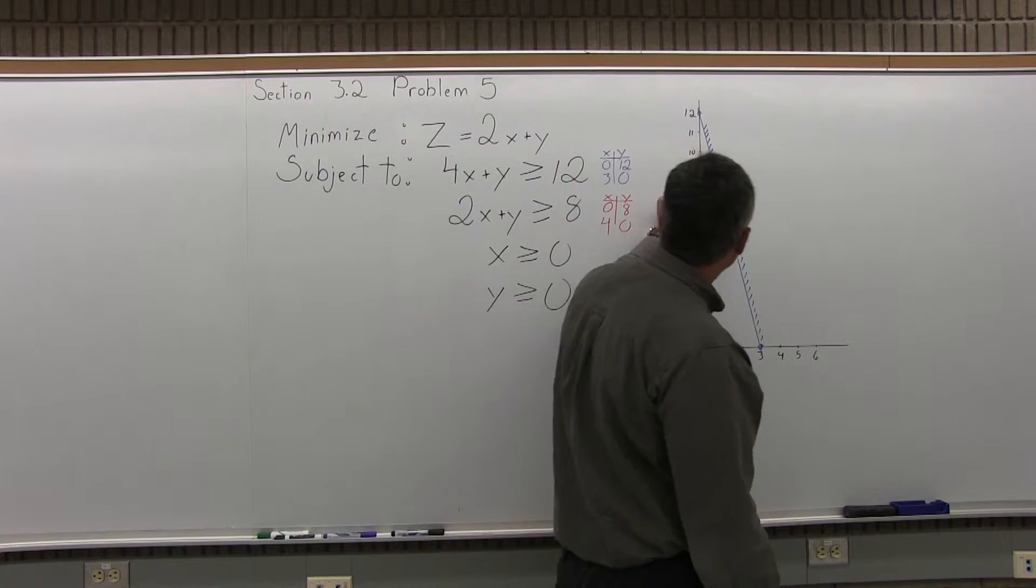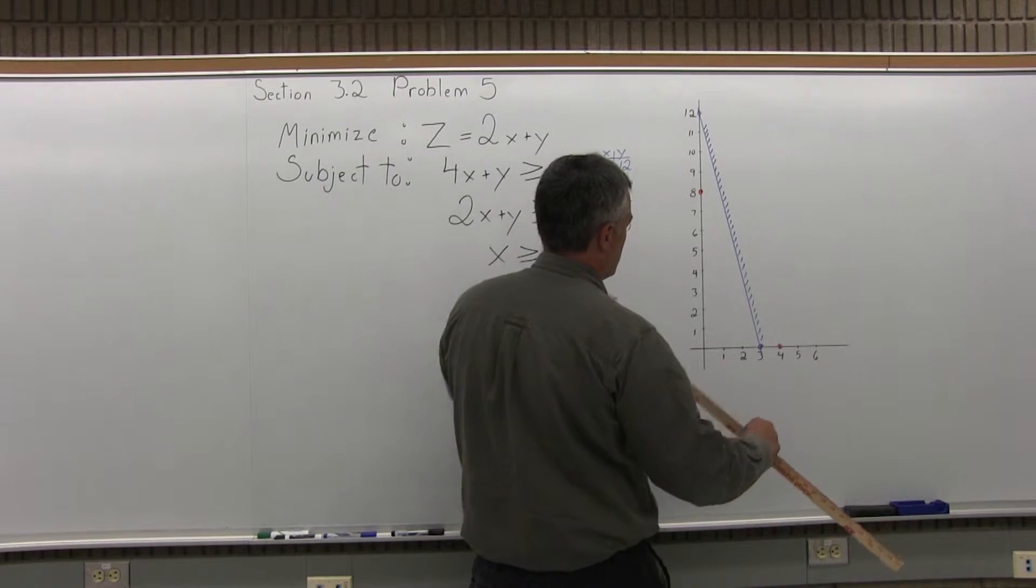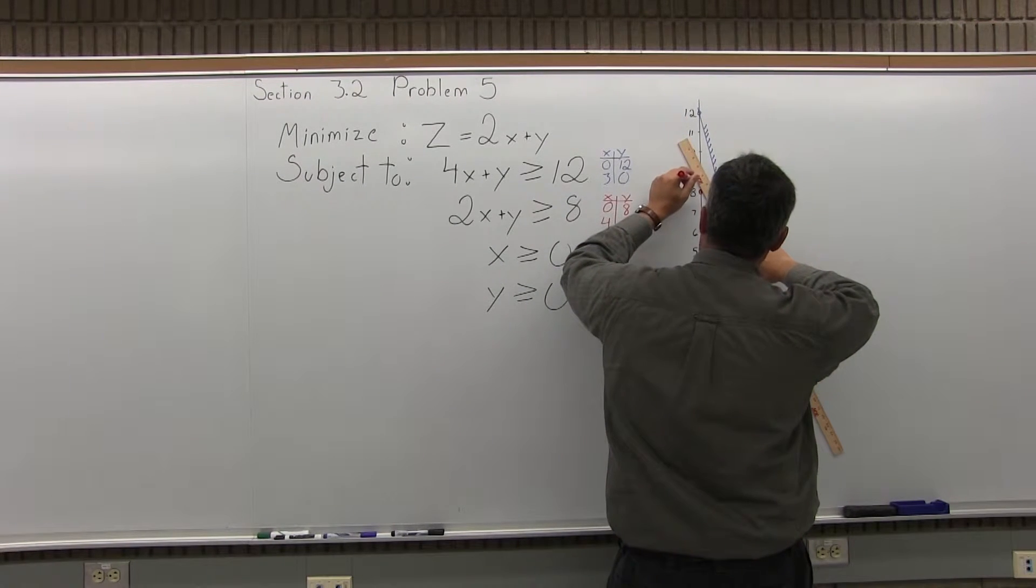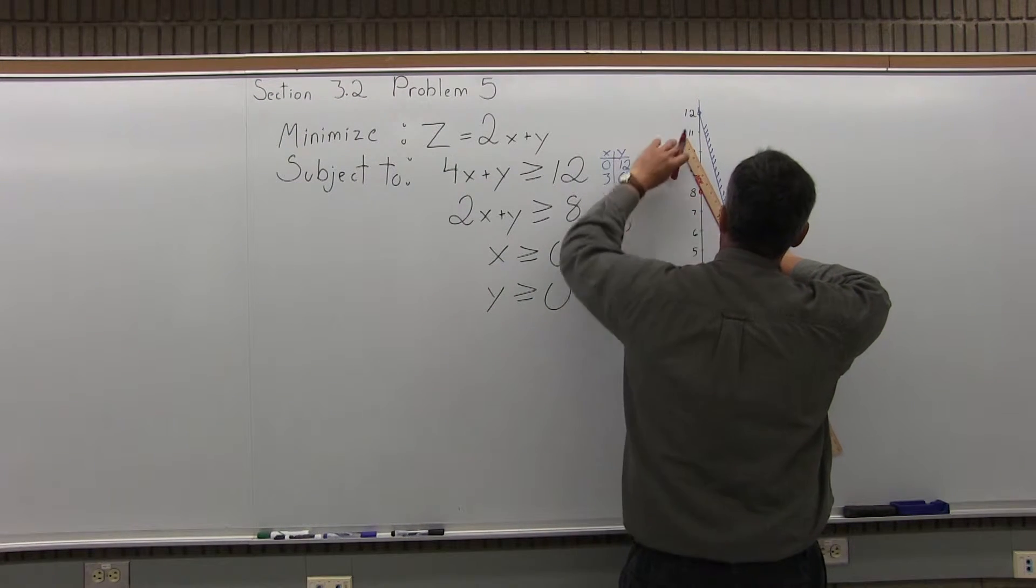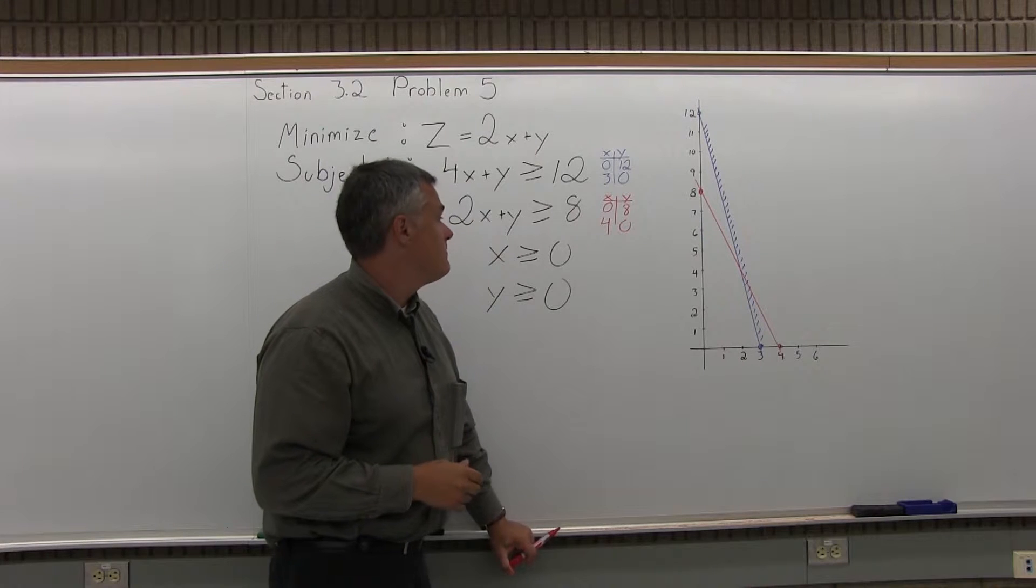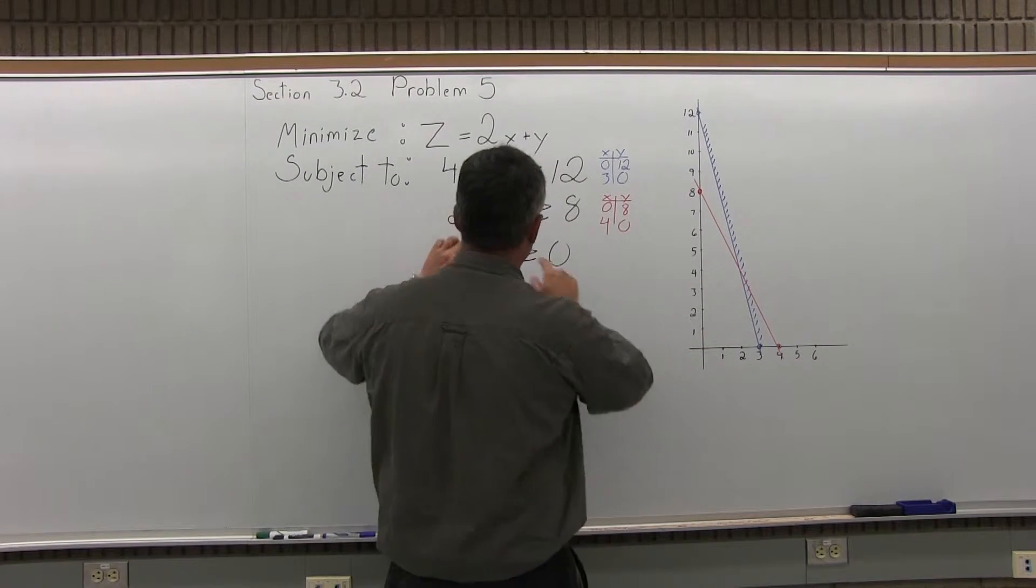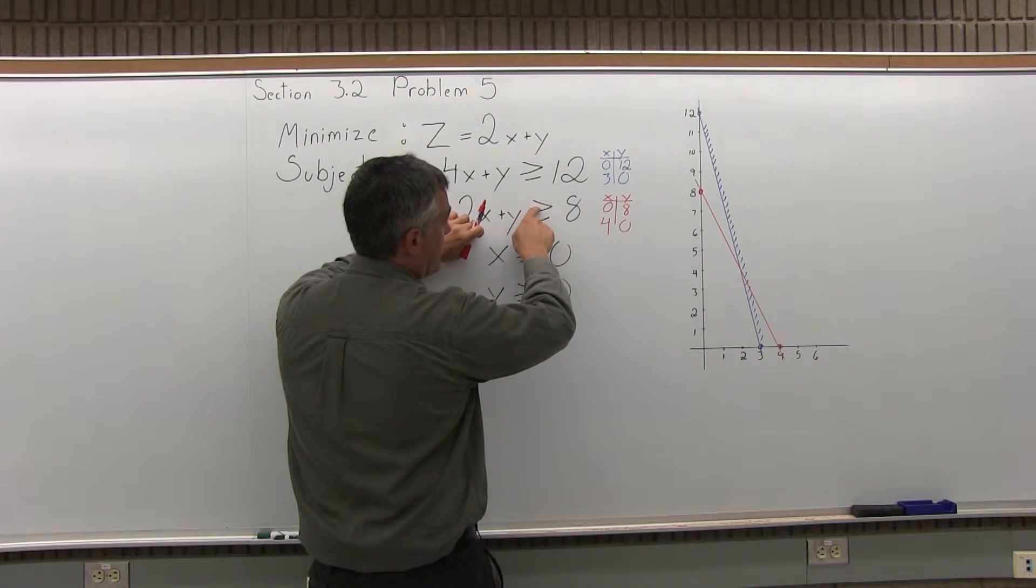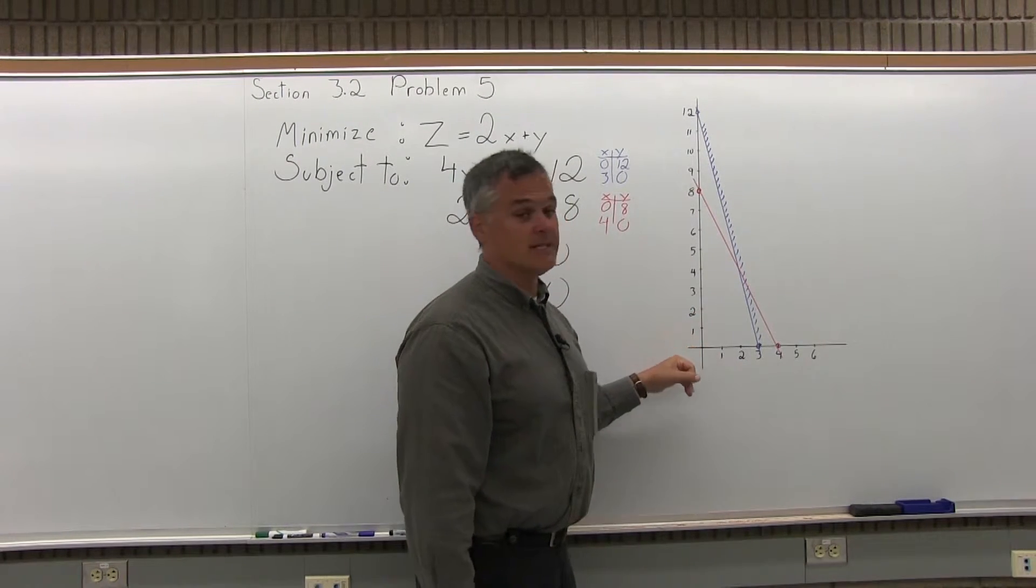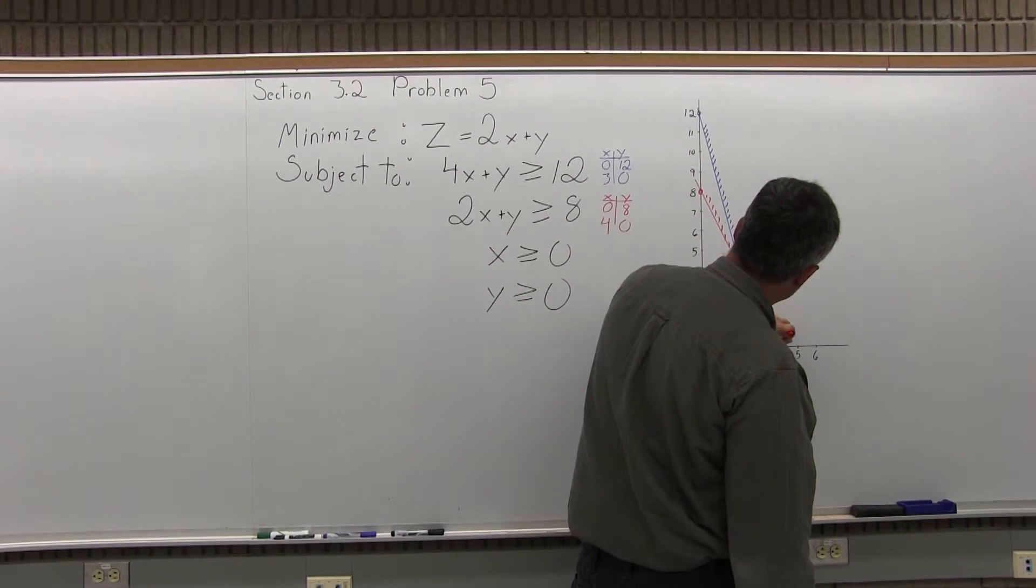So I'll put those on the graph. 0, 8 is over 0 and up 8. And 4, 0 is over 4 and up 0. Now, let me take my ruler, and I will connect those. Now, at this point, I have to determine whether I shade below the red line or above it. And to do that, I'm going to pick a test point that's not on the line. Use 0, 0 if I can. 0, 0 is not on the line. So I'll use 0, 0 as my test point. 0 for x, 0 for y. I get the result 0 is greater than 8. Not true. 0 is not greater than 8. So my test point was on the underneath side. The result was false. Therefore, the underneath side is blank because I got a false result, which means the opposite side is shaded, the above side.